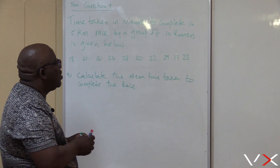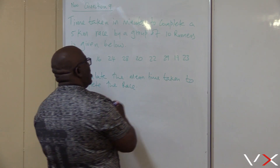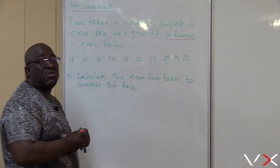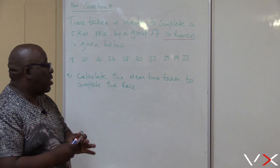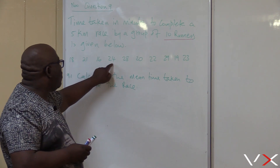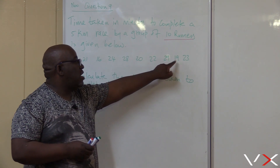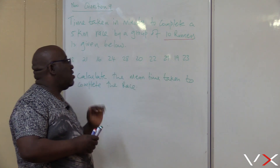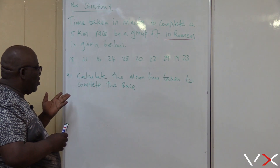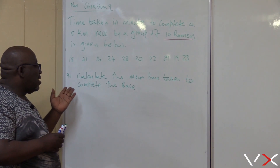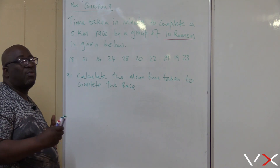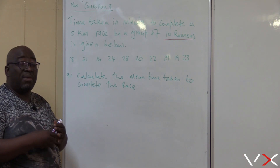Remember we were told that these runners are 10. You can check whether the times listed are also 10 — 1, 2, 3, 4, 5, 6, 7, 8, 9, 10. Everything is captured. What is the first question? Calculate the mean time taken to complete the race.